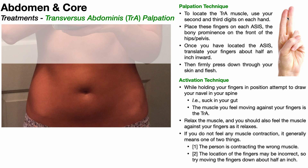To find the muscle, you're going to use your second and third digits — the pads of digits two and three. It's a deep muscle covered by the external and internal obliques, but there's one spot where you should be able to feel it contract. You're going to place those fingers on the ASIS on each side — the anterior superior iliac spine, that bony prominence on the front of the hips and pelvis. I purposely chose a picture where that ASIS is pretty prominent, visible on both the right and left sides.